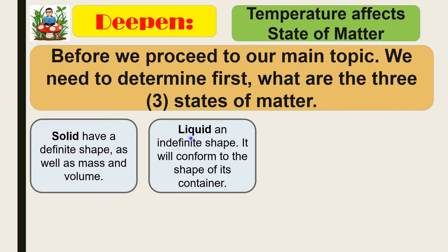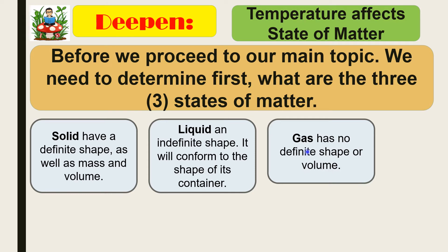The next state of matter is liquid, which has an indefinite shape — it will conform to the shape of its container. Examples include water, soy sauce, vinegar, and soft drinks. The last state of matter is gas. It has no definite shape or volume. Examples include the steam you saw in the boiling water video, and also smoke from cars and factories.